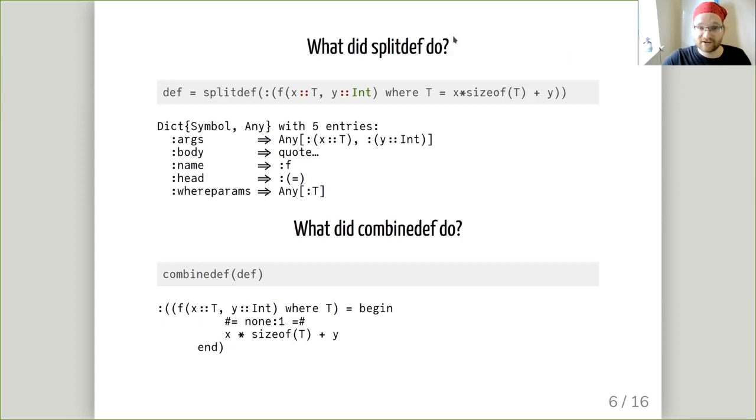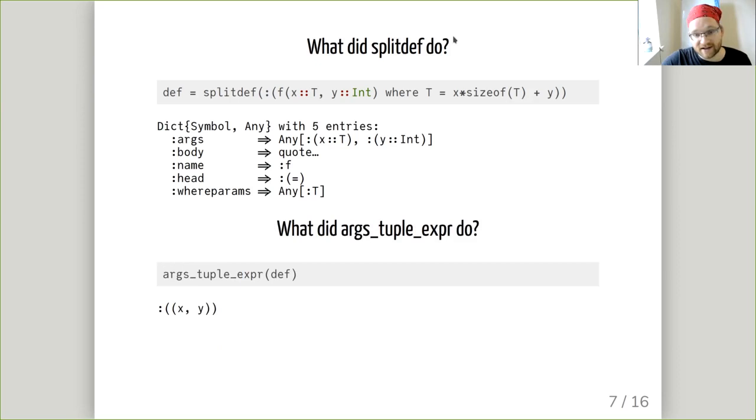What does splitdef do? Splitdef gave us a dictionary that separated out the arguments, the body, the name of the function, etc. Combineddef is inverse. Combineddef took such a dictionary and gave us back an AST for the function. Finally, you may have spotted args_tuple_expr. That's a helper that takes in a dictionary and extracts out just the names of the arguments, so it strips off all of the type constraints.